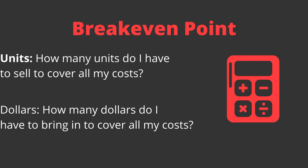Your breakeven point can be expressed in two ways: units or dollars. Units means how many units do I have to sell to cover all my costs? That could be product or service — how many cookies, how many pairs of shoes, or how many hours of service. If you charge $40 for a manicure, that's your unit. If you charge $100 for a haircut, that's your unit. If you charge $75 an hour, that's your unit.